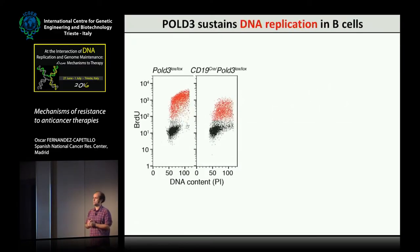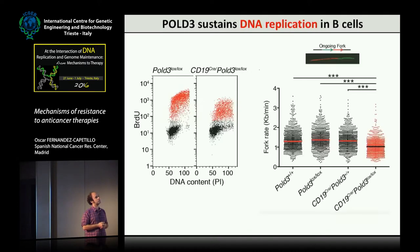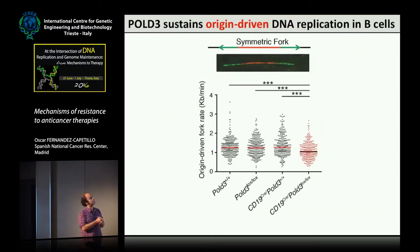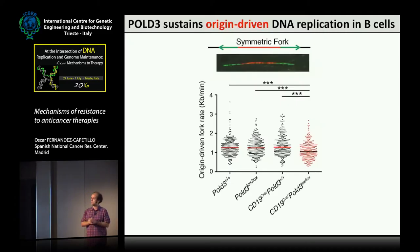As part of the Pol D complex, we looked at DNA replication in B cells where we delete with a B cell-specific allele, and we see a major impact of Pol D3 deletion on DNA replication — a severe decrease by FACS and fiber assays. This was done together with Juan Mendez. Because Pol D3 has also been linked to translesion synthesis, we wanted to address specifically whether origin-driven DNA replication was affected by focusing on symmetric forks — and there is also a problem there. So Pol D3 is important not just for TLS or BIR, but for canonical origin-driven DNA replication.